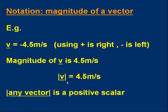We have a special shorthand way of writing the magnitude: we use two vertical lines and put the symbol for the vector in between. So if you saw vertical lines with v in between, you would read that as the magnitude of v equals 4.5 meters per second. Notice the magnitude of any vector is always a positive scalar value. Don't think the magnitude is minus 4.5 — the negative sign is used to give direction information; it's not part of the magnitude. The magnitude is always a positive scalar.